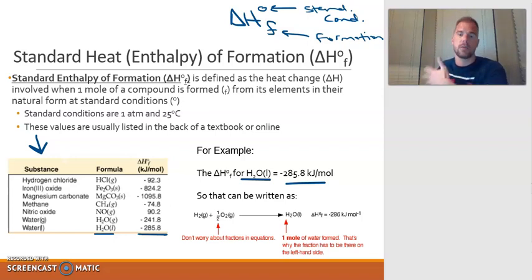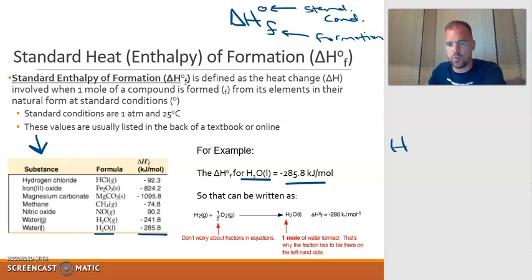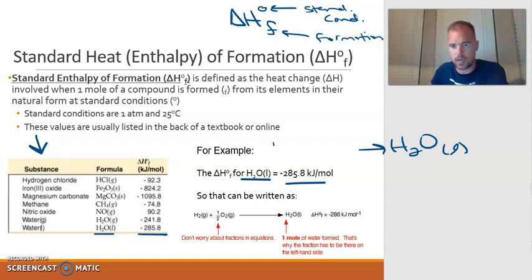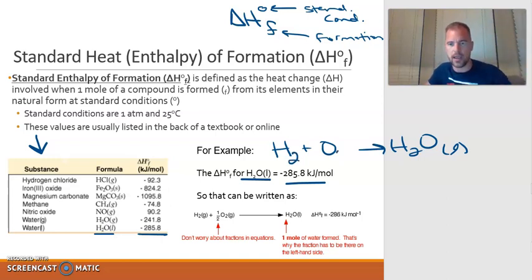We can write this as a thermochemical equation. To write the heat of formation for water: start with H₂O as the product. What elements make up water? Hydrogen and oxygen — both written diatomically as H₂ and O₂, since that's their standard form. Both are gases at standard conditions. Balancing the equation gives 2 H₂ + O₂ → 2 H₂O, but the definition requires one mole of product, so divide all coefficients by two: H₂ + ½ O₂ → H₂O.